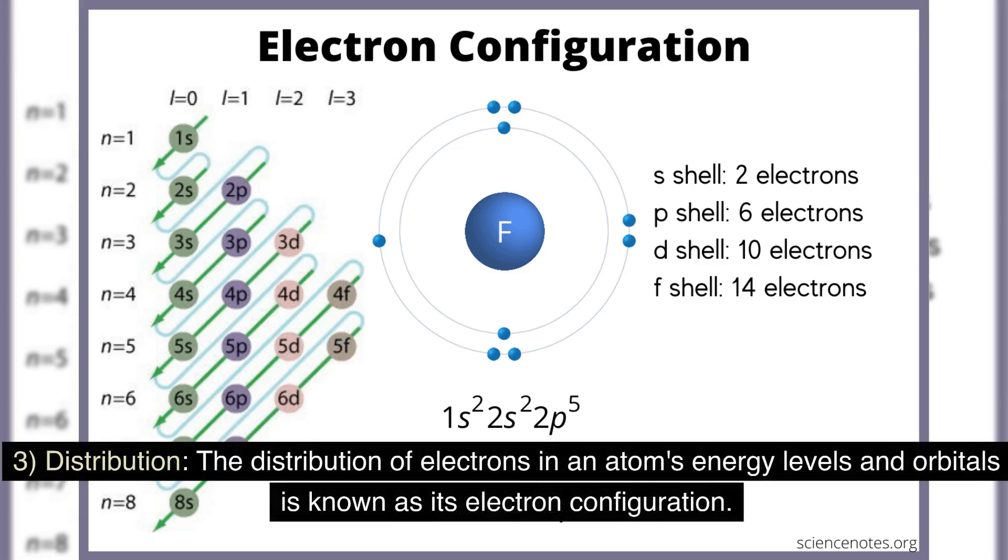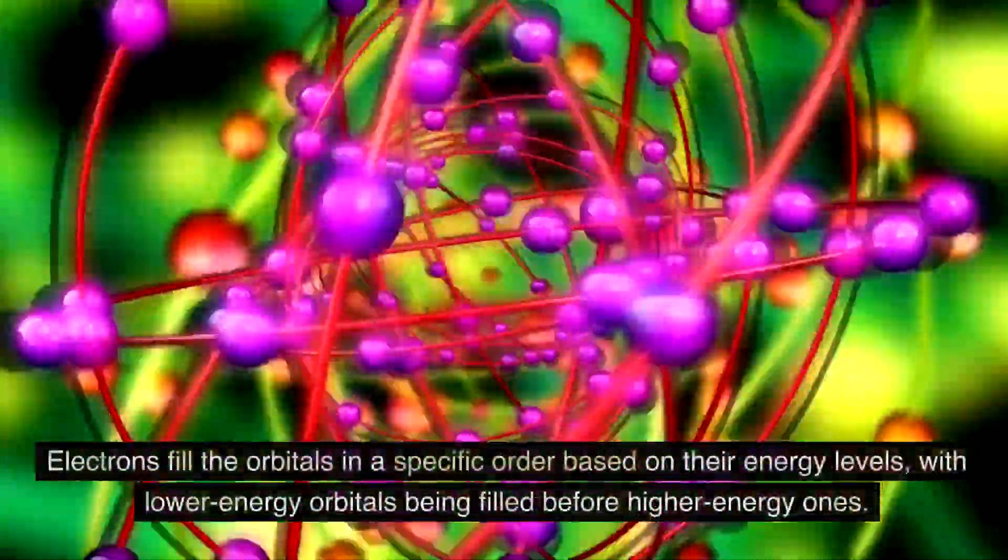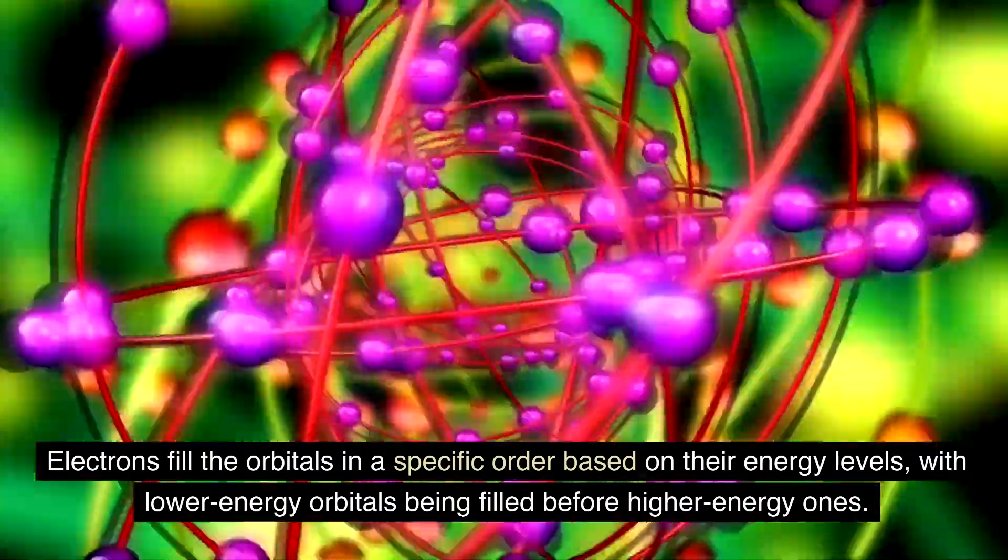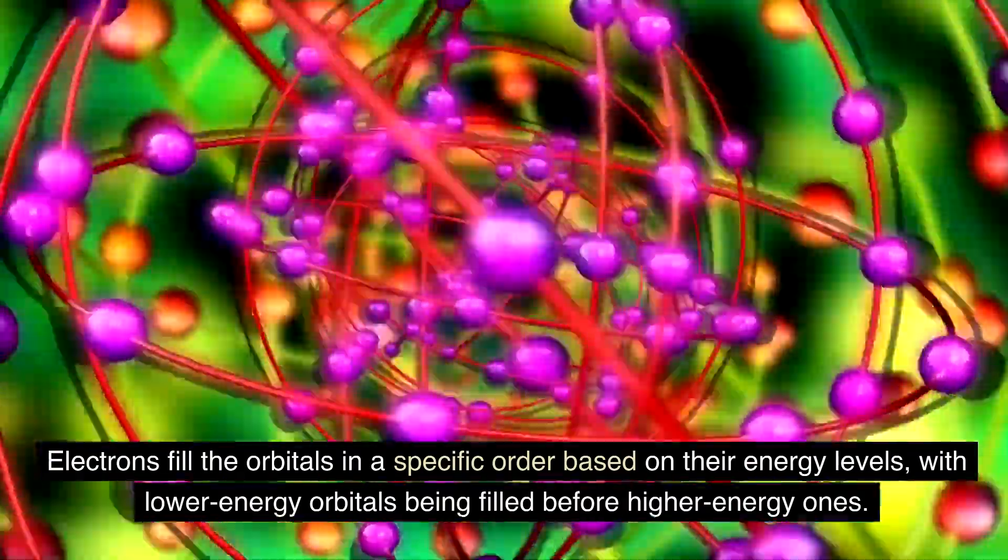Distribution: the distribution of electrons in an atom's energy levels and orbitals is known as its electron configuration. Electrons fill the orbitals in a specific order based on their energy levels, with lower-energy orbitals being filled before higher-energy ones.